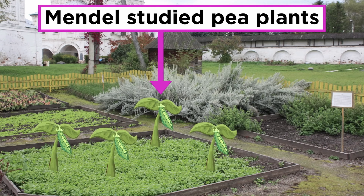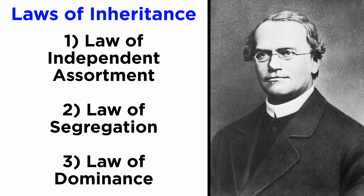Mendel experimented with pea plants while working as an Augustinian friar in the Czech Republic. His work acted as the foundation of the laws of inheritance, which are the law of independent assortment, the law of segregation, and the law of dominance.